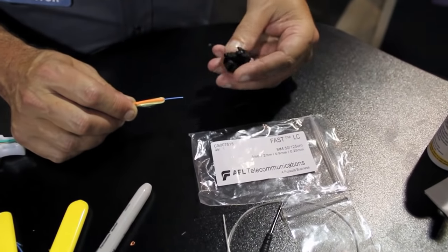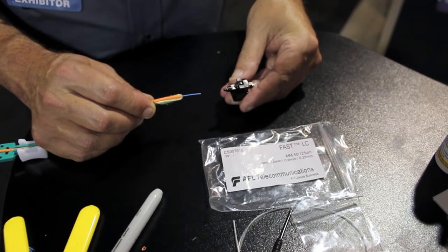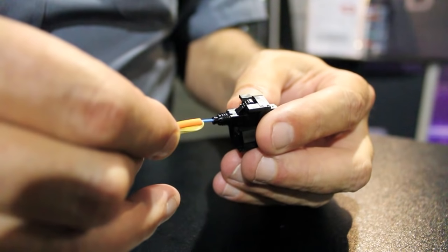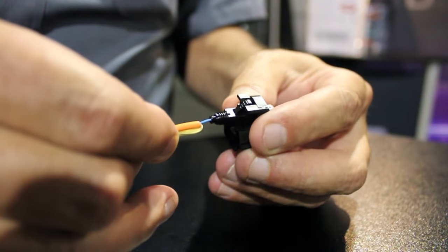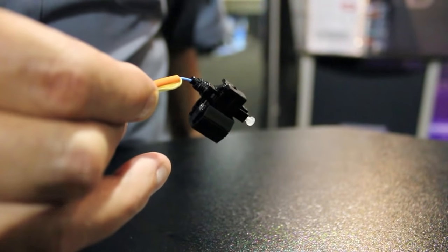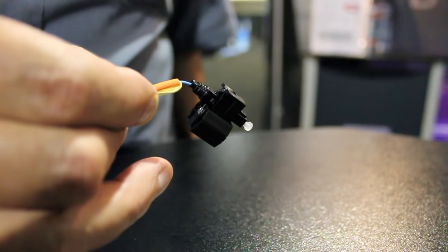Now the fiber end, the actual LC connector, is preloaded in the tool in the kit. And you just need to insert it into the back end until you feel it stop. Keep some slight pressure on it. And squeeze the sides of the tool. And you'll hear it click. And at that point, your LC connector is connected to the fiber.